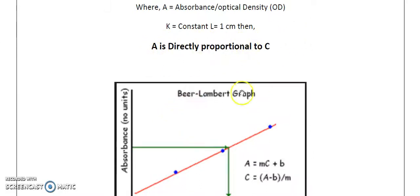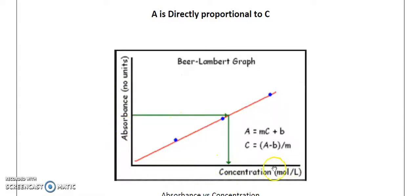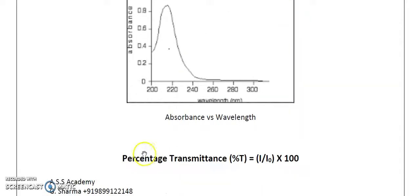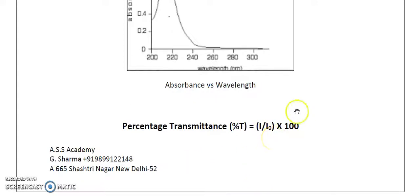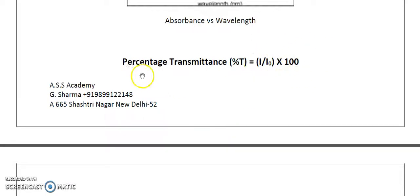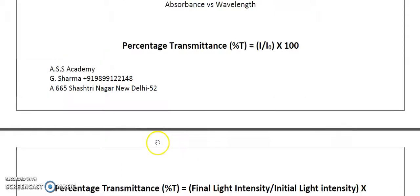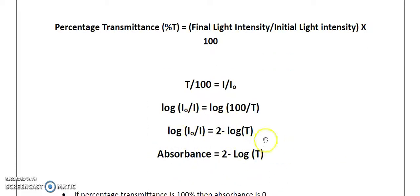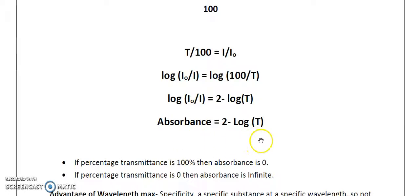If we plot a diagram with absorbance on the y-axis and concentration on the x-axis, we see a straight line, confirming absorbance is directly proportional to concentration. Percentage transmittance (T%) is defined as (I/I₀) × 100. Rearranging: T/100 = I/I₀, so I₀/I = 100/T. Since log(I₀/I) = absorbance, taking log of both sides gives: absorbance = log(100/T) = 2 − log T, where T is transmittance.